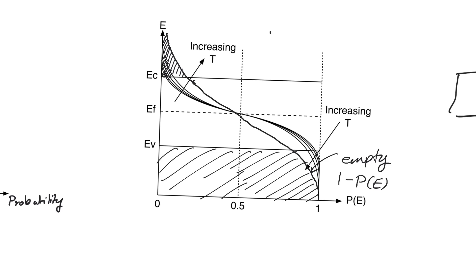For an electron to be generated in the conduction band, it has to have jumped from the valence band, leaving behind a hole. So we can conclude that N, the concentration of electrons in the material (number of electrons per centimeter cubed), equals p, the concentration of holes. This is valid for pure silicon only. Sometimes electrons also jump back down — they recombine with the hole left behind, leading to annihilation of both the electron and hole. Recombination and generation happen in any material all the time, and their balance level gives us the equilibrium concentrations of electrons and holes, which is a function of temperature.